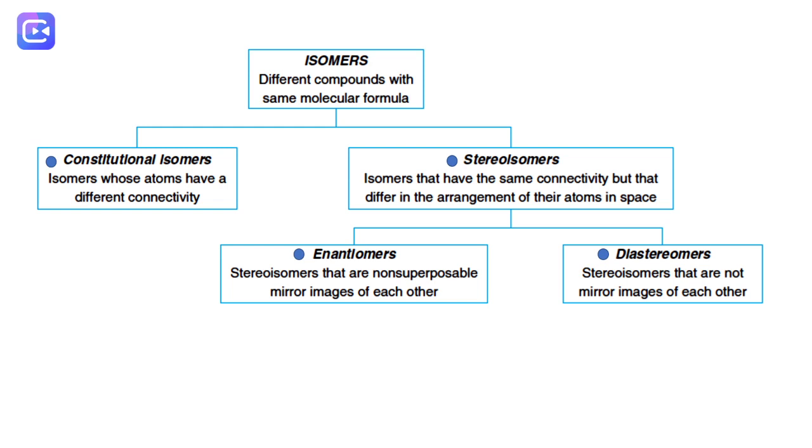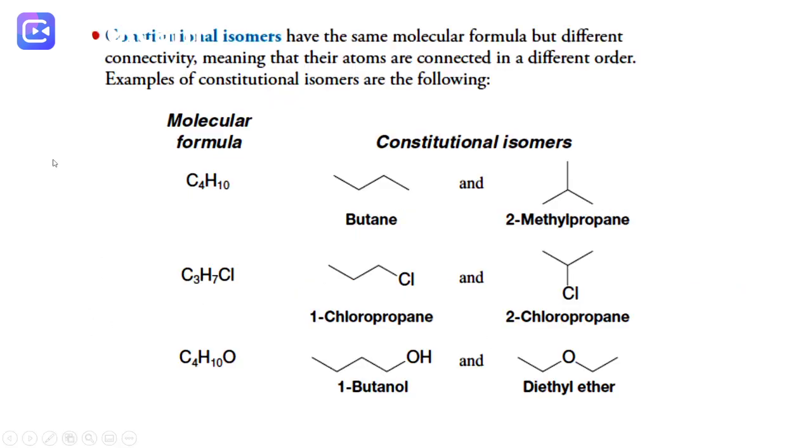Constitutional isomers are compounds that have the same molecular formula but are different because the atoms connect in a different way.